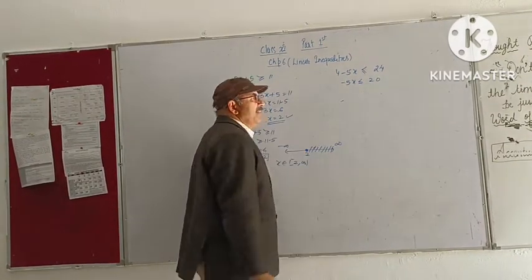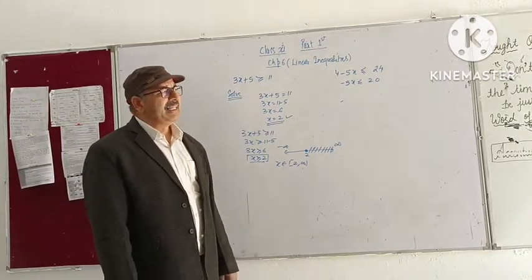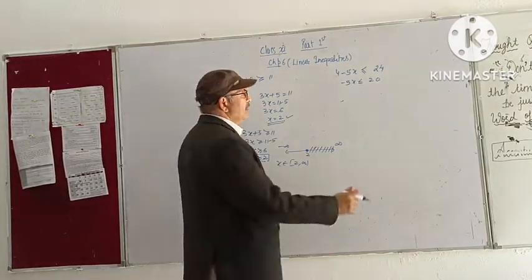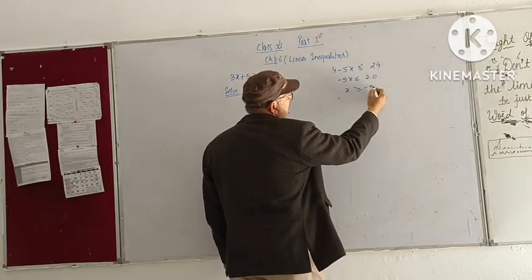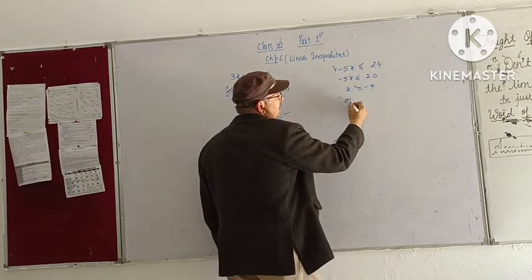If I have minus 5x divided by minus, either divide or multiply, then this sign will be changed. So what is this? Divide by minus 5, x is a plus, and this sign will be changed. So the answer is,